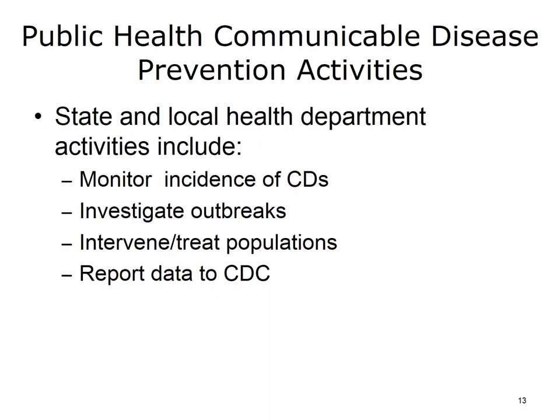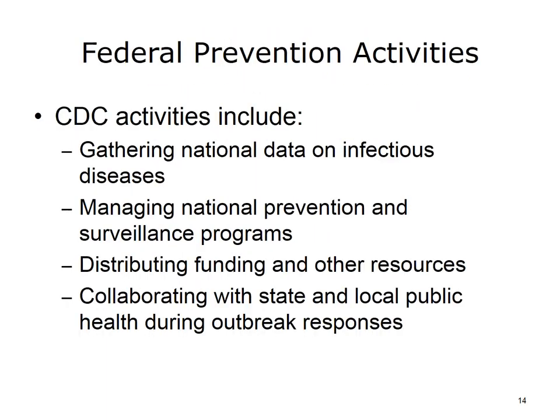Public health departments at the state and local level work to prevent communicable disease in the population through a combination of monitoring and surveillance, outbreak investigation, interventions and treatments, and reporting of data to the CDC. Federal-level activities by the CDC include gathering national data, managing national prevention and surveillance programs, distributing funding, and collaborating in outbreak responses.